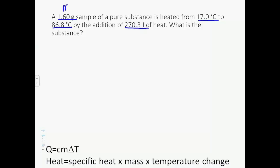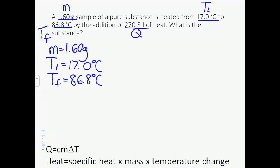1.60 grams, that's our mass. Heated from 17 degrees, that's our temperature initial. 86.8 degrees, temperature final, with the addition of 270.3 joules, so that is our heat. Mass equals 1.60 grams. Temperature initial equals 17.0 degrees Celsius. Temperature final equals 86.8 degrees Celsius. Heat equals 270.3 joules.